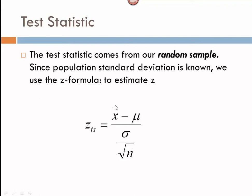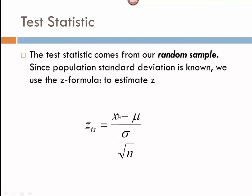When entering this into your calculators, always put parentheses around the top numbers and parentheses around the denominator quotient. This will give you the correct test statistic value. I label this with TS so we can distinguish it from the critical value z, since they're both z-values.